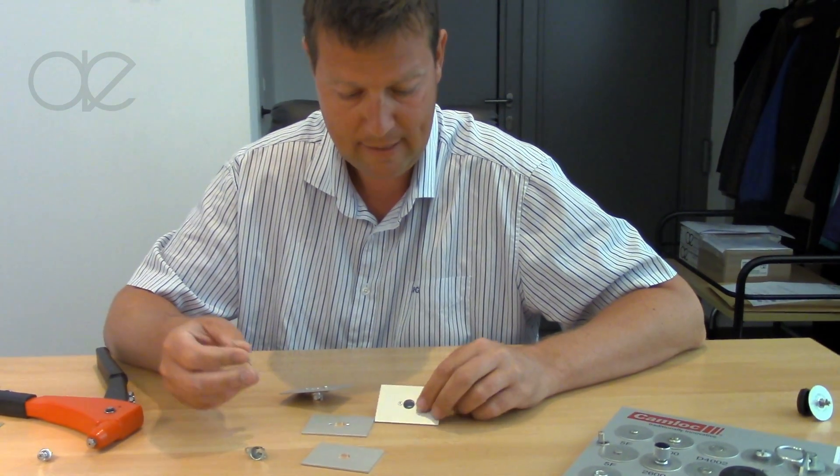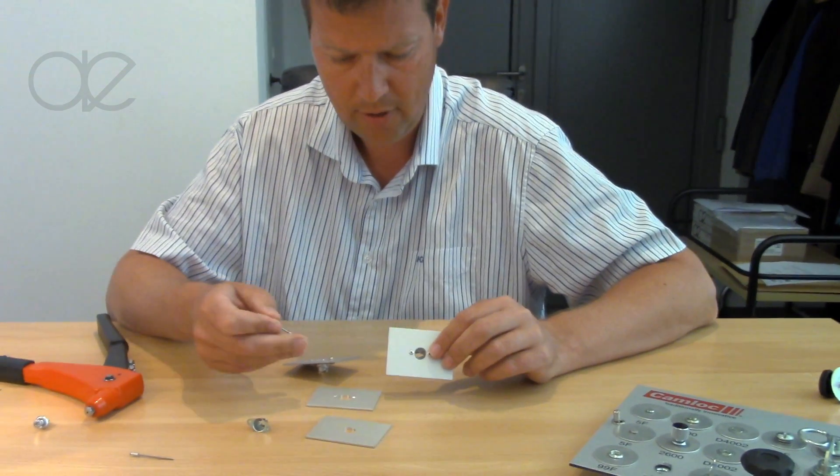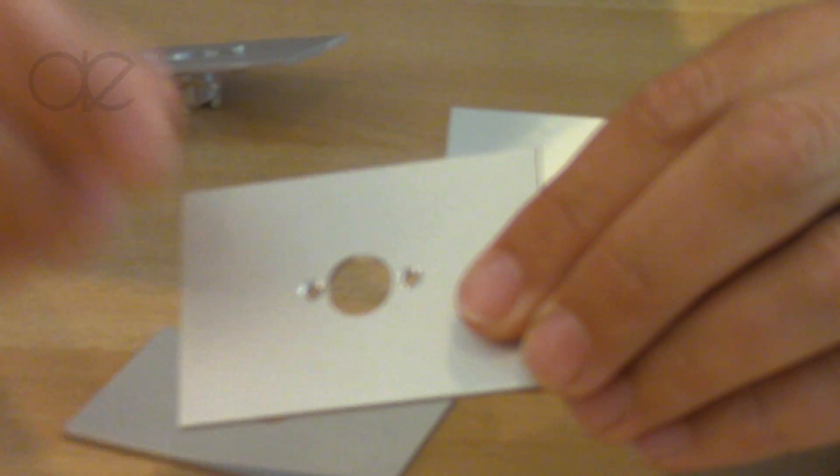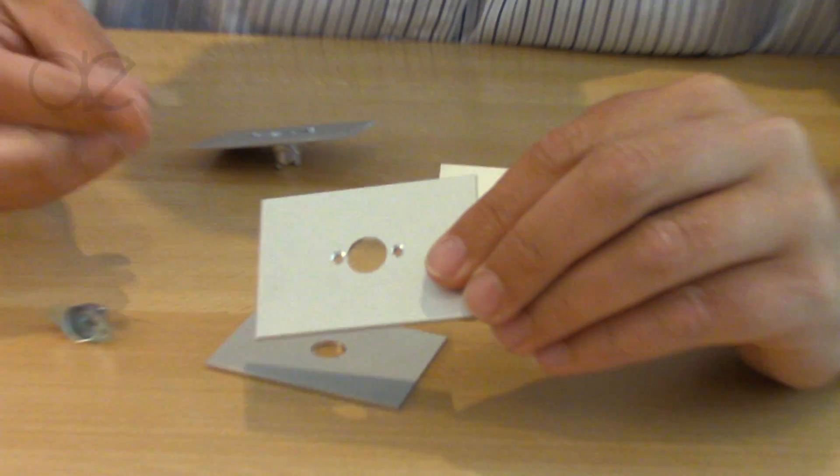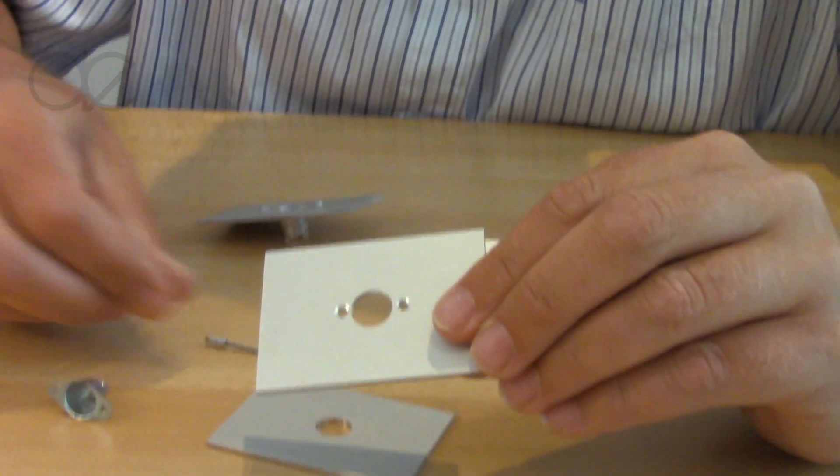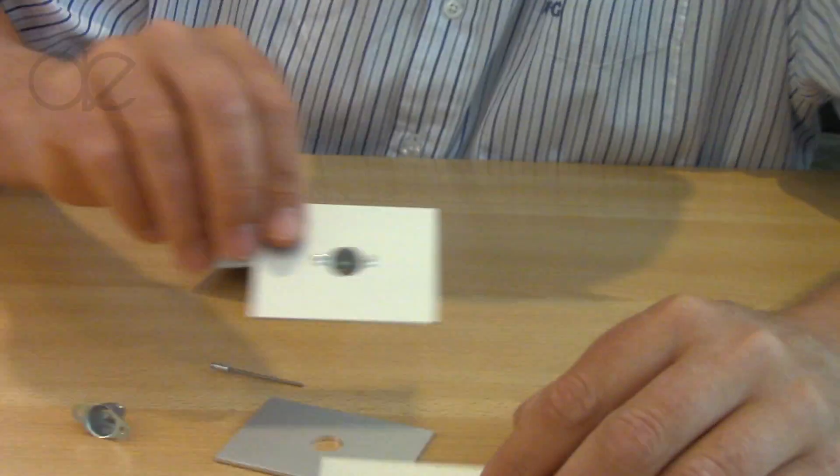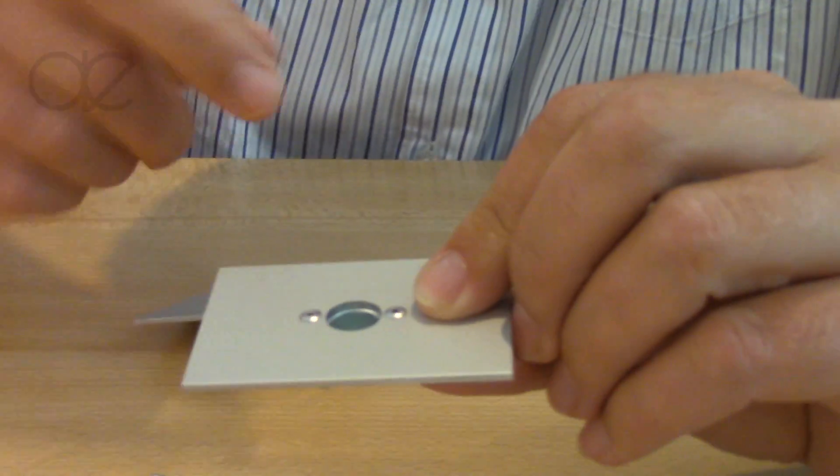Now, when you install your receptacle, just look at the plates here. You need to countersink. You see here you need to countersink the holes where your rivet will go in. If you don't do that, if you forget to countersink, then your rivet will be a bit up.